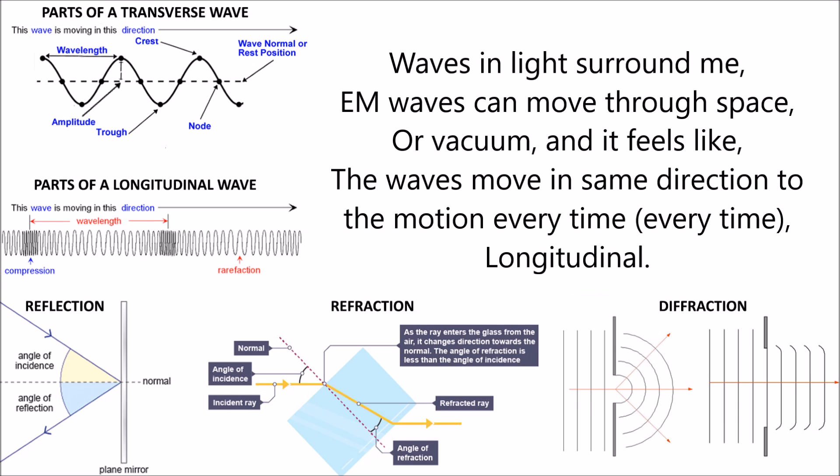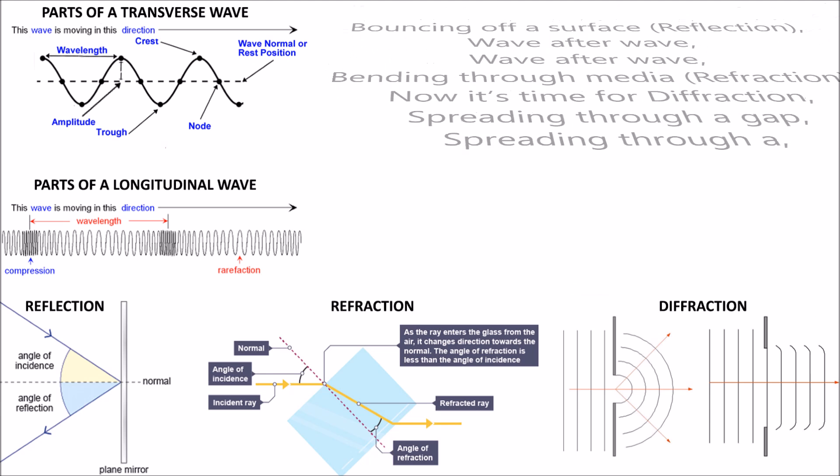Waves and lights surround me. EM waves can move through space or vacuum. The waves move in the same direction as the motion every time, longitudinal.